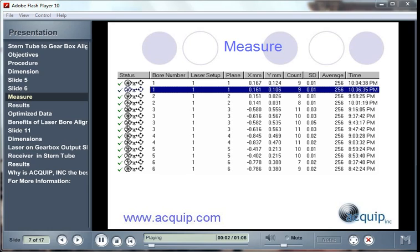When measurements are taken with the laser alignment equipment, we get quite a bit of information. We're going to get a horizontal and a vertical deviation of the center of the bore from the centerline. We get the standard deviation of the readings. And you can also see the averages here.